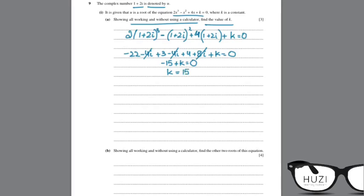Showing all working without a calculator, find the other two roots. If one root is 1 plus 2i, the second root is 1 minus 2i, because complex roots are always in conjugate pairs. Then you find the quadratic factor to find the real root of the cubic function.